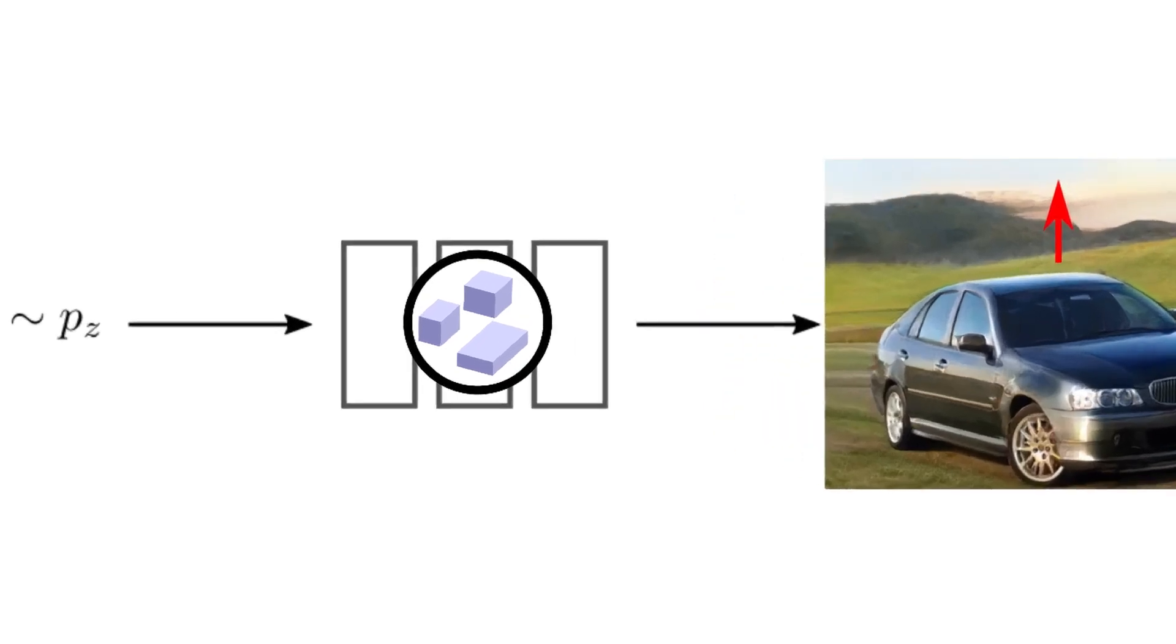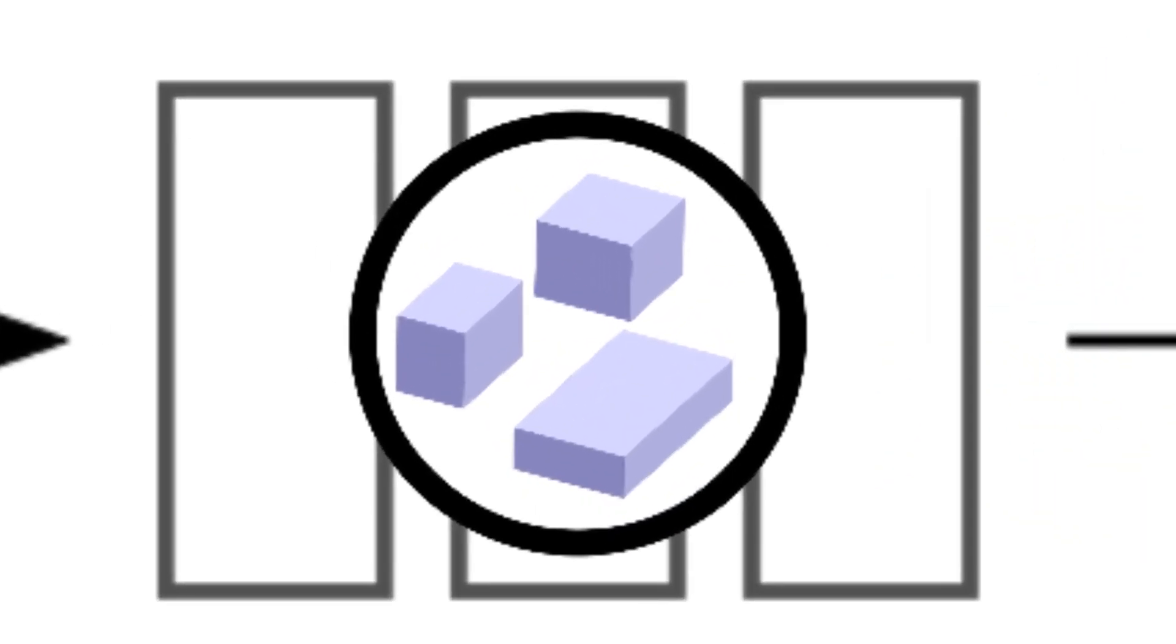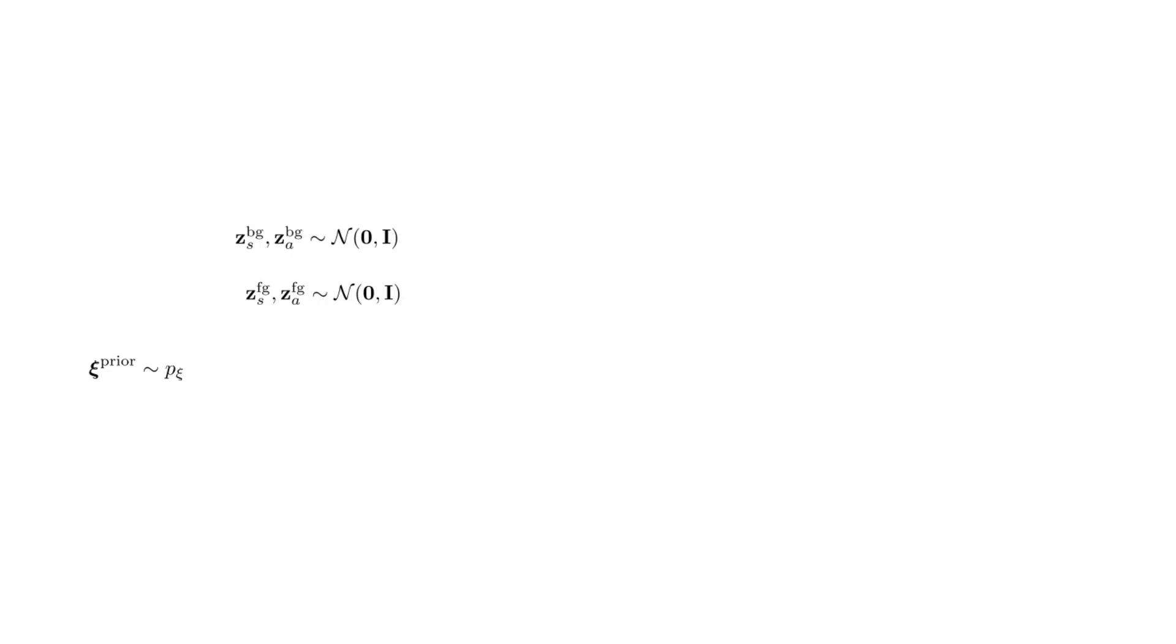Let's have a quick look at how our model actually looks like. We start off by sampling latent shape and appearance codes for the background as well as the foreground, as well as the prior camera pose.